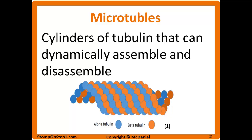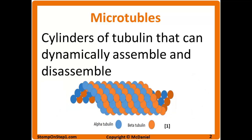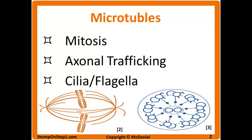Microtubules are cylinders of tubulin subunits that can dynamically assemble and disassemble, allowing them to change shape for different functions. They also interact with motor proteins like dynein, which walk along microtubules like a train on a track. Three of the most important functions of microtubules: they help cells separate during mitosis, they're involved with axonal trafficking bringing signals and nutrients from the nucleus of the nerve to its end, and they make up cilia and flagella.